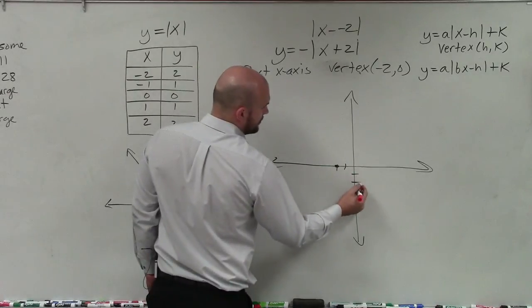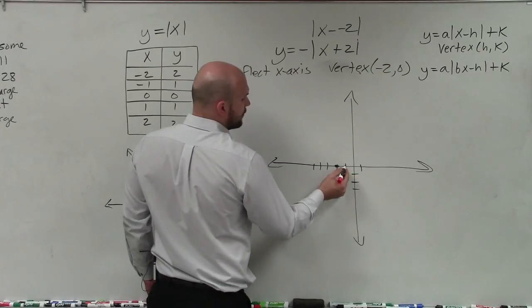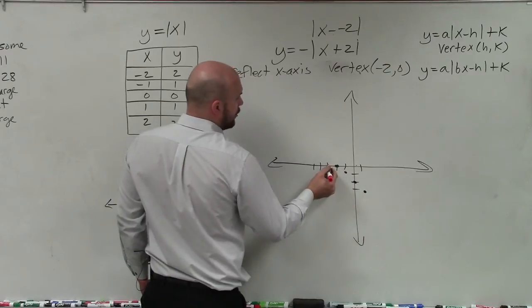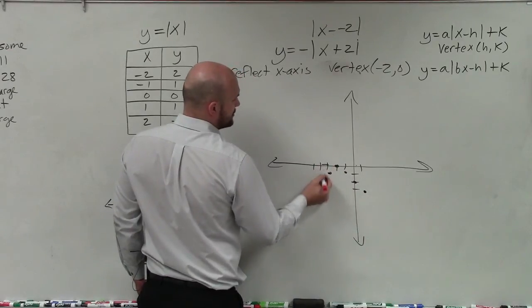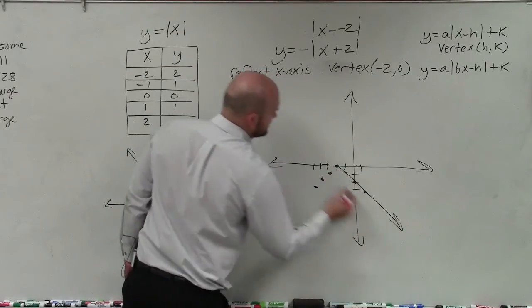So I'm going to go over 1 down 1, over 2 down 2, over 3 down 3, and then I can just connect my points.